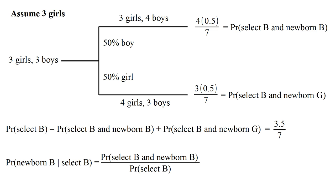So what's the probability we want to calculate? We want to know the probability of having a newborn boy given that we selected a boy. This is the probability of the top branch divided by the sum of the two branch probabilities — the probability of selecting a boy and it being a newborn boy, divided by the total probability of selecting a boy. This simplifies to four out of seven, which is approximately 57.1%. So this is larger than 50% as we expected.